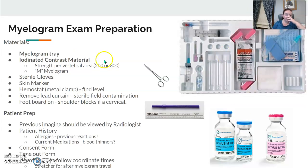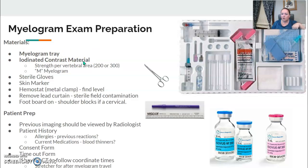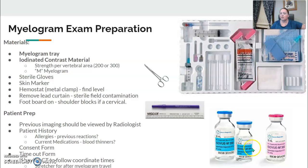For myelogram exam prep, you'll grab the myelogram tray, which looks identical to the arthrogram tray on the outside. You want water-soluble contrast — ours was labeled ISOVU with the letter M. Certain strengths are for lumbar and certain strengths are for cervical, so always check your protocols. The higher strength goes higher up in the spine; lumbar typically uses 200 and cervical uses 300, but always follow your department protocol.